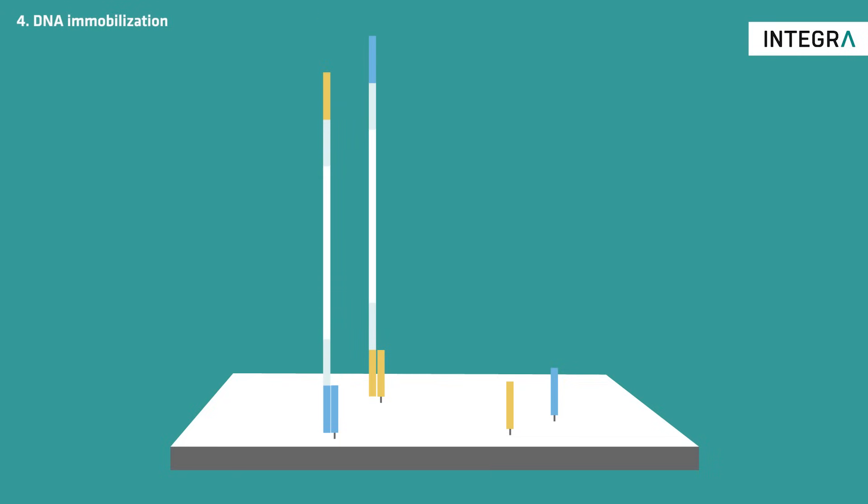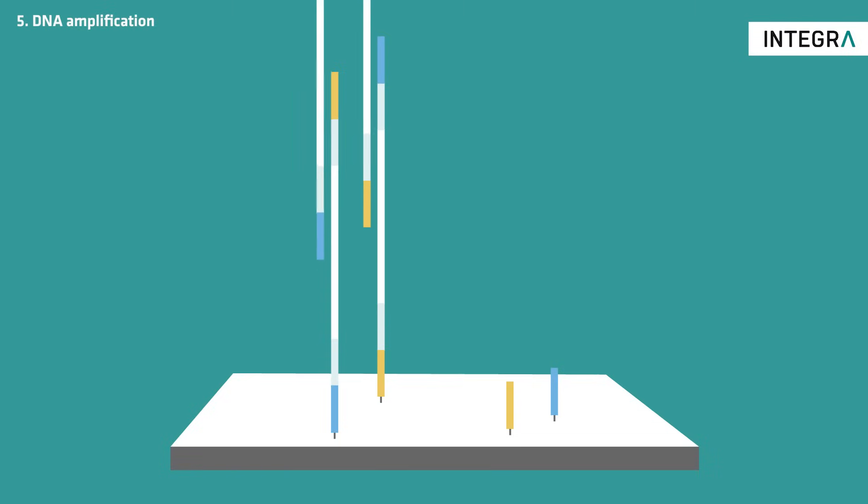Once your sample sequences are attached to the flow cell, a single PCR cycle is performed to copy them. After this step, the sequences are denatured and the sample DNA strands are washed out.